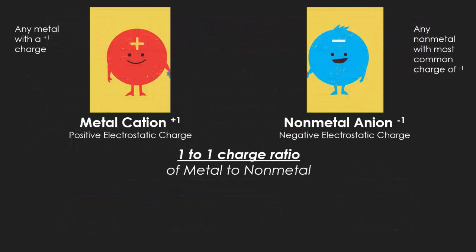In an ionic bond, equal charges from the cation — the metal — and equal charges from the nonmetal — the anion — cancel each other out to make a neutral compound. In this situation, we have one metal to one nonmetal. Looking at the charges, they represent a positive one on the left and a negative one on the right. Together, when you add them up, they neutralize each other.